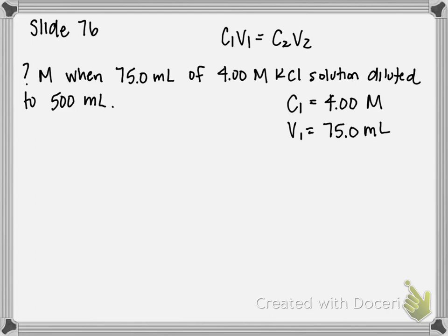And then it says the solution was diluted to 500 milliliters. So that is our V2. And notice it doesn't give us a second concentration. So that's what we're solving for.